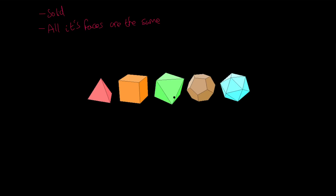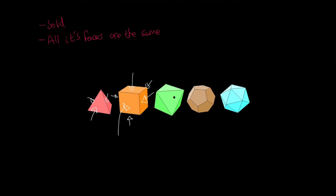For example, if we look at a cube, we have a face here which is a square, another one here, one at the back, one to the side, and one at the bottom — and they're all the same. All of the faces, whether we can see them or not, are the same polygon with the same angles and the same length, identical in every aspect.